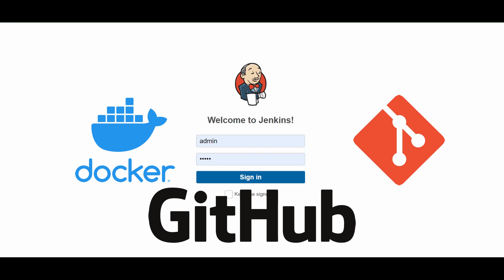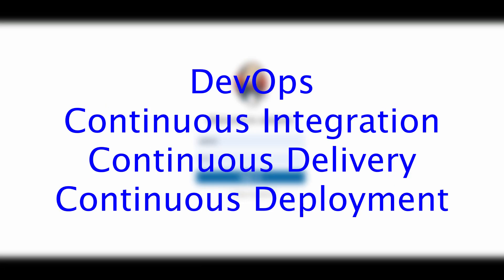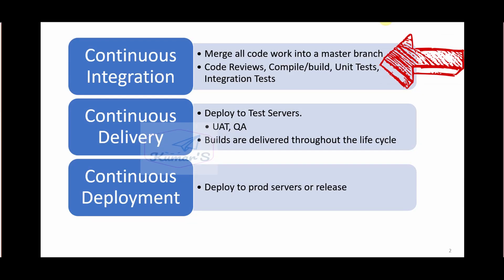Without further ado, let's get started. What are the main things in DevOps and CI/CD? In Continuous Integration, we merge all our code into the master branch or main project branch. Developers might be working on different branches — a feature branch, hotfix, or defect fixes branch. The code gets reviewed before merging, then it's built, compiled, and unit tests and integration tests are run.